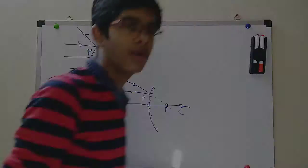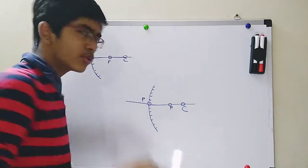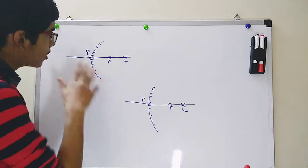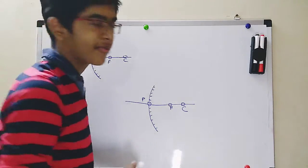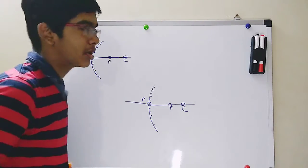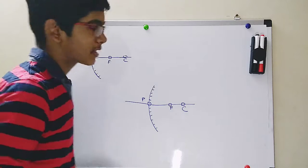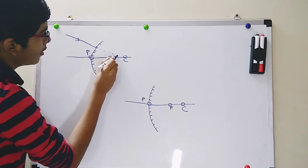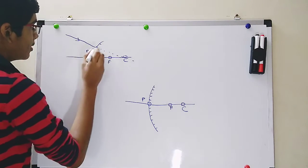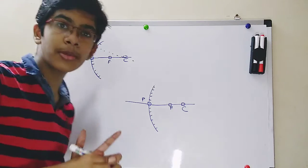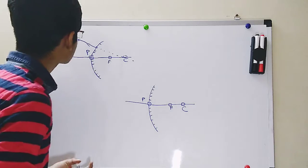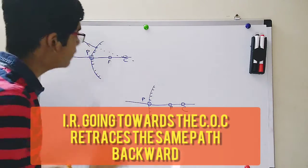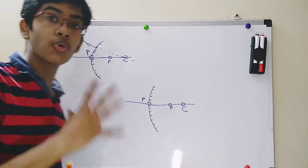Now we'll discuss rule number three and rule number four. Rule number three was: all the light rays passing through the center of curvature will retrace the same path backward. For a convex mirror, we can't draw a light ray passing through the center of curvature because the center of curvature is behind the mirror — no light rays can reach there. So if we draw a light ray and extend it, and if it meets at the center of curvature, then it will retrace the same path backward. Rule number three for a convex mirror: all incident rays going towards the center of curvature will retrace the same path backward after reflection.